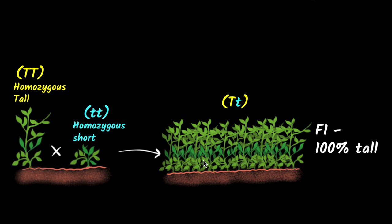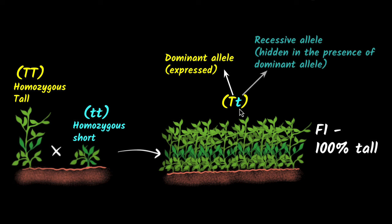Now they're all tall. Therefore, this means that this tall one is a dominant allele. That means that when the tall allele is there, it doesn't matter what the other allele is, it gets expressed. It gets shown over here. And the other one is called the recessive allele. It is hidden in the presence of the dominant allele.